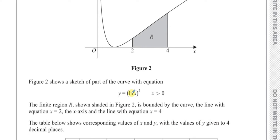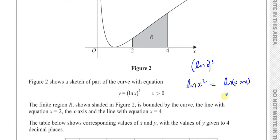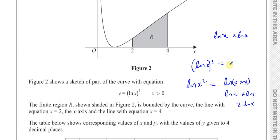The curve has equation y equals ln(x²). This is not ln(x)² — there's a difference. ln(x²) means the ln of x squared, which is the same as 2 ln x by the power law. But (ln x)² means ln x times ln x — you can't use the power law for that. These are two different things; they are not the same.